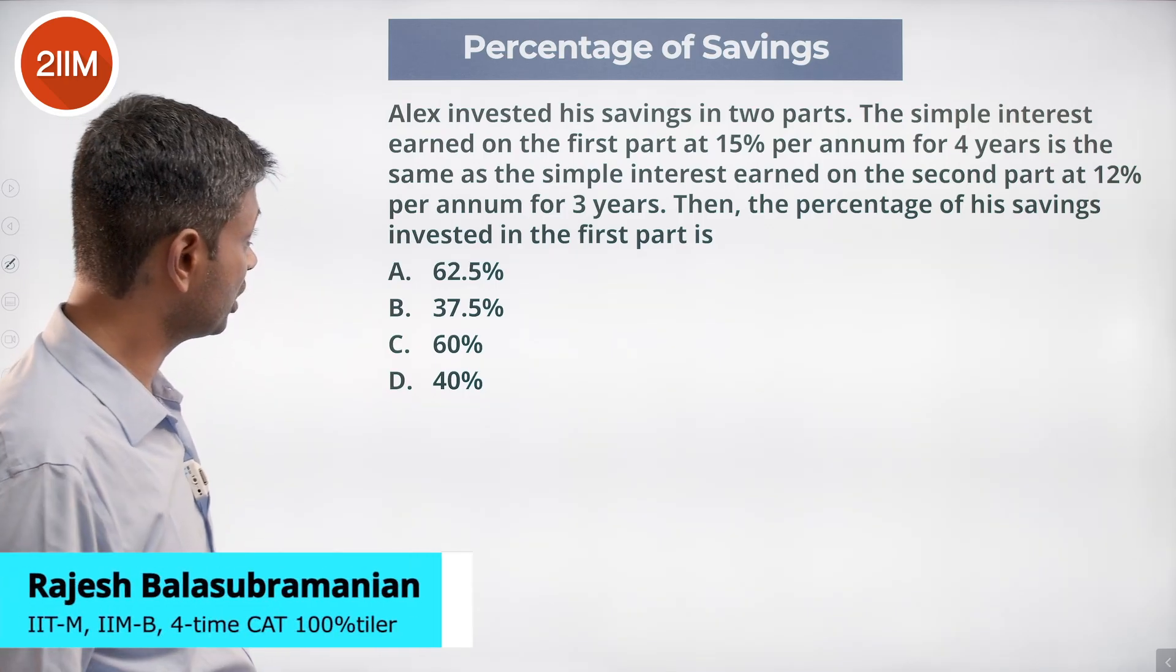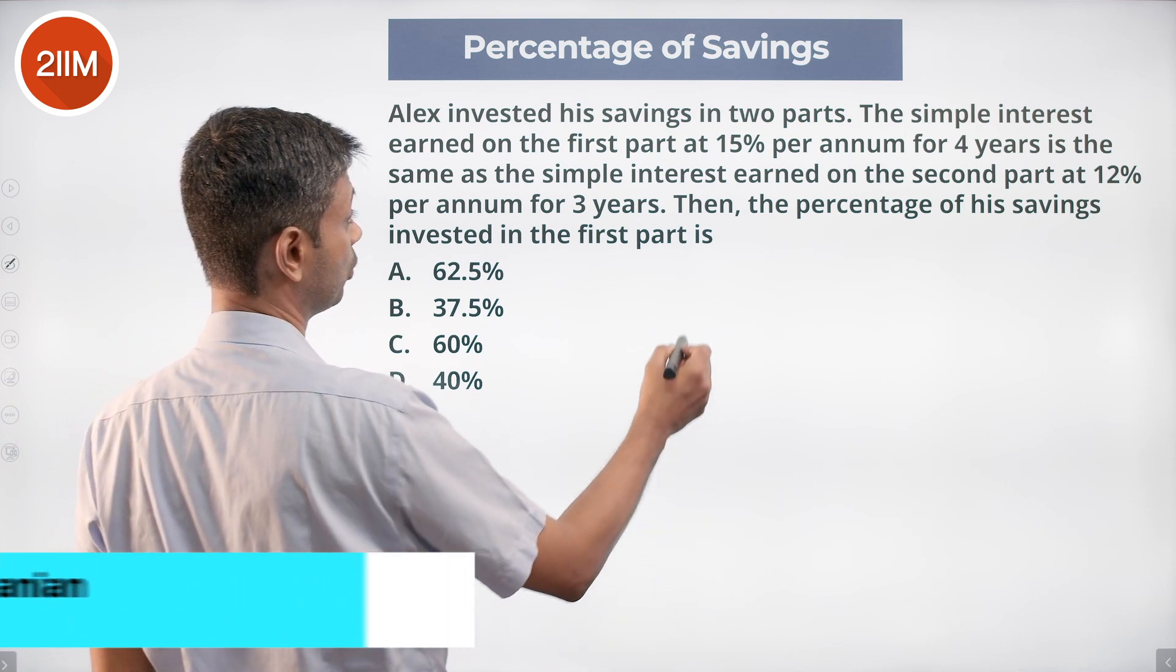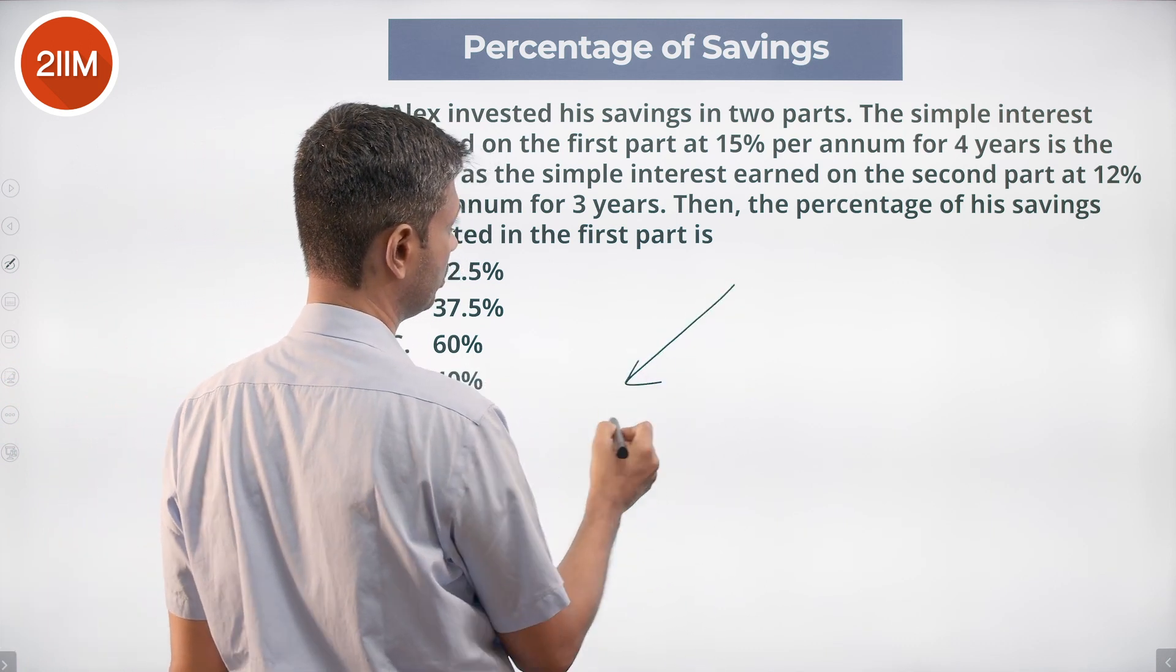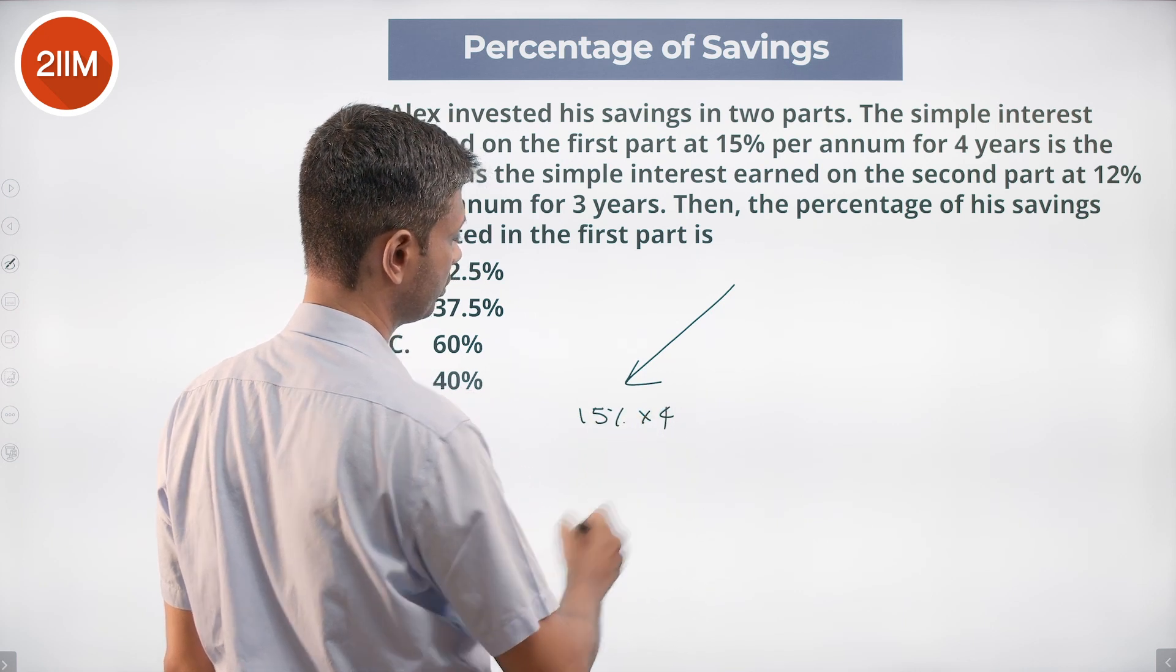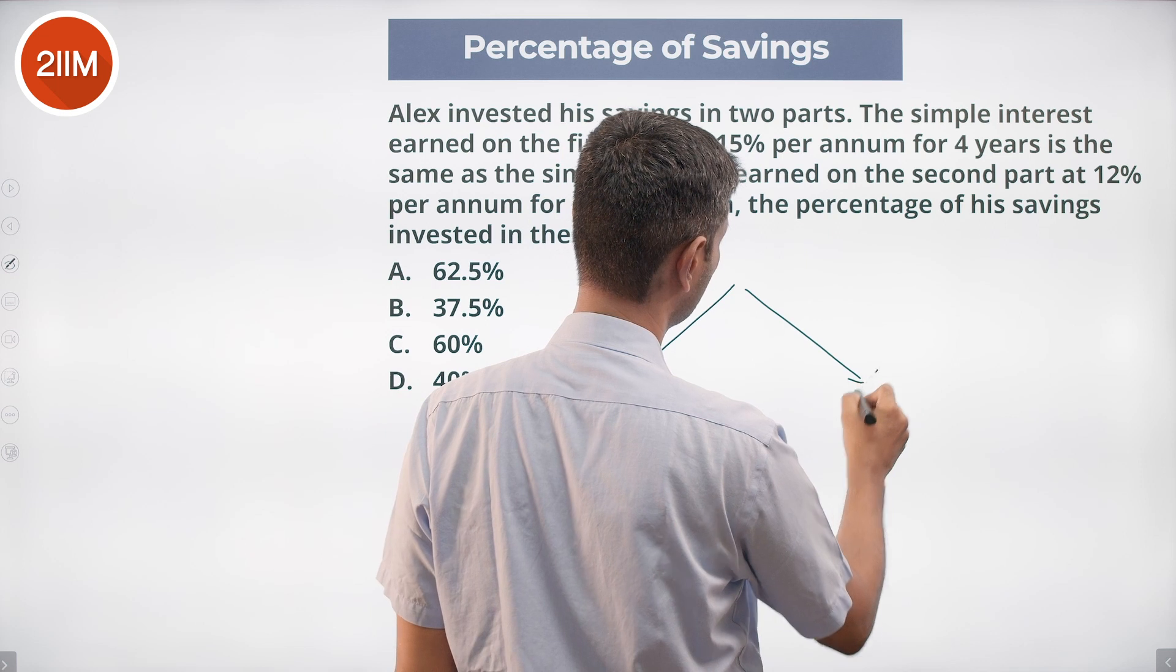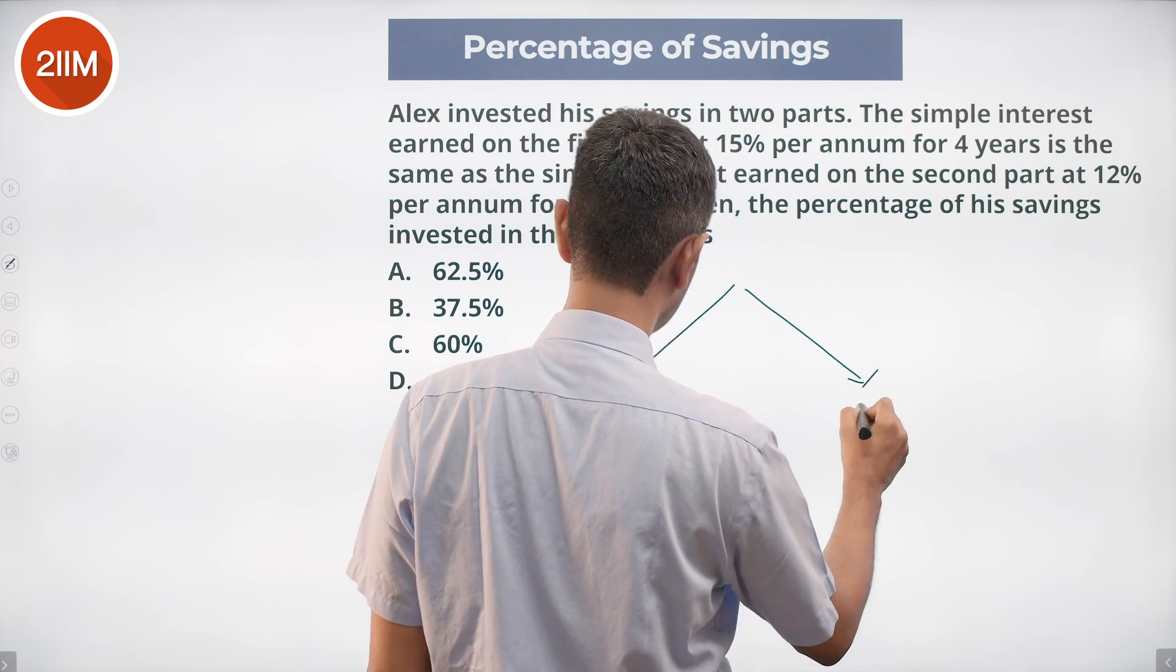Alex invested his savings in two parts. The simple interest earned on the first part at 15% per annum for four years is the same as the simple interest on the second part at 12% per annum for three years.